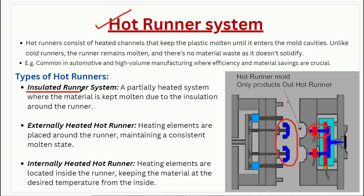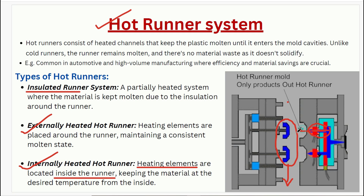To maintain runner temperature we can use an insulated runner system, external heating, or internal heating — heating elements are placed inside the runner so that the temperature is maintained. There are three types: insulated, externally heated, and internally heated. With these systems there is no wastage of material; only the part is removed while the runner temperature is maintained, and molten material remains available for each cycle, giving good efficiency and material savings.